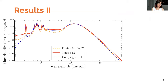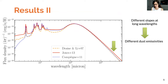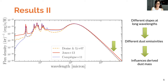The second thing I want to show is that different dust models have different SEDs. You can see several differences, but I want to highlight one thing: the different slopes at long wavelengths. This is because the different models use different dust emissivities, and this will have an influence on the dust mass that you derive. So using different models you can get different answers.